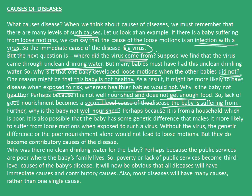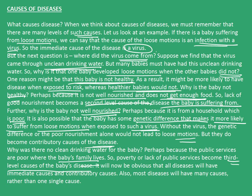Further, why is the baby not well nourished? Perhaps because it is from a household which is poor. It is also possible that the baby has some genetic difference that makes it more likely to suffer from loose motions when exposed to such a virus. Without the virus, the genetic difference or the poor nourishment alone would not lead to loose motions, but they do become contributory causes of the disease. So, why was there no clean drinking water for the baby? Perhaps because the public services are poor where the baby's family lives. So, poverty or lack of public services become the third level cause of the baby's disease. It will now be obvious that all diseases will have immediate causes and contributory causes, and most diseases will have many causes rather than one single cause.